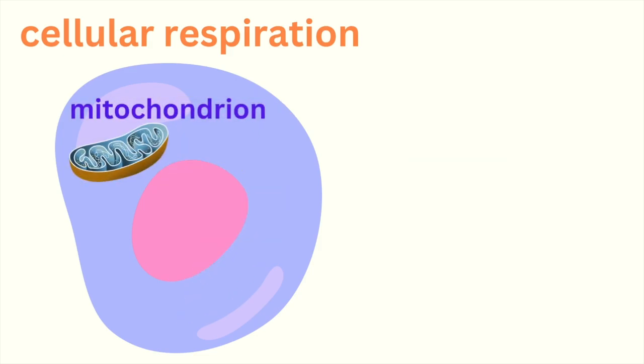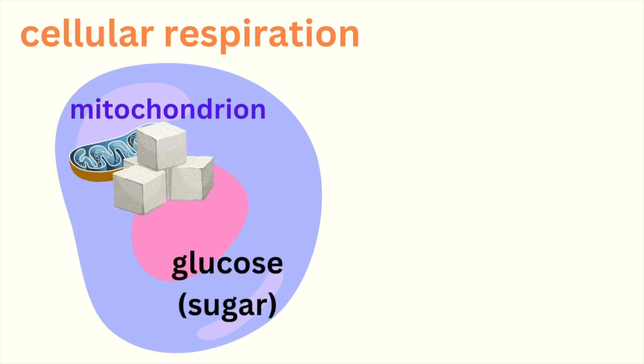The main organelle responsible for cellular respiration is the mitochondrion. Just like chloroplasts, mitochondria are tiny powerhouses, but instead of making food, they help break it down.